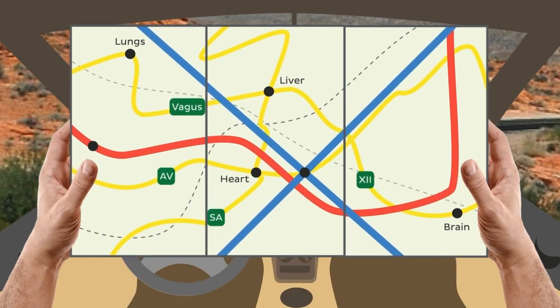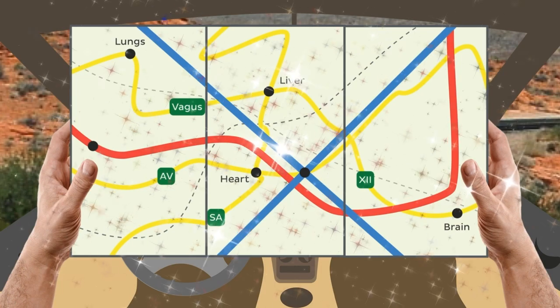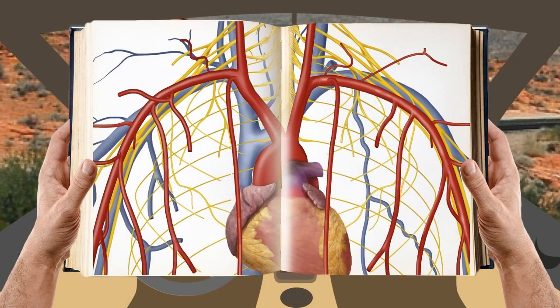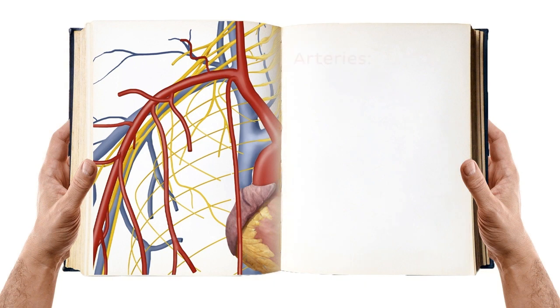Did you notice all the different coloured roads? The red major roads, the yellow minor roads and the big blue highways? Don't you think it looks somewhat familiar to what we see in our anatomy textbooks? Red arteries, yellow nerves and blue veins.